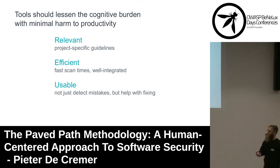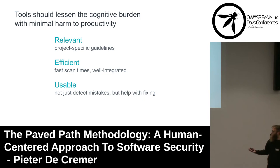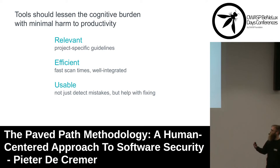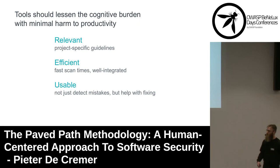We will lessen the cognitive burden and try to have minimal impact on their productivity. In the paved path methodology, we want to make tools as relevant as possible, so the guidelines we are enforcing should be project-specific — not just generally applicable — because then they are less likely to be relevant to the developer. It needs to be easy to customize these rules for each project, each company. It should also be efficient — we want the scan times to be as fast as possible. With Sensei and Semgrep, they are nearly real time, and hence well integrated into developer workflows. They can function similarly to spell checkers, but for security of the code.